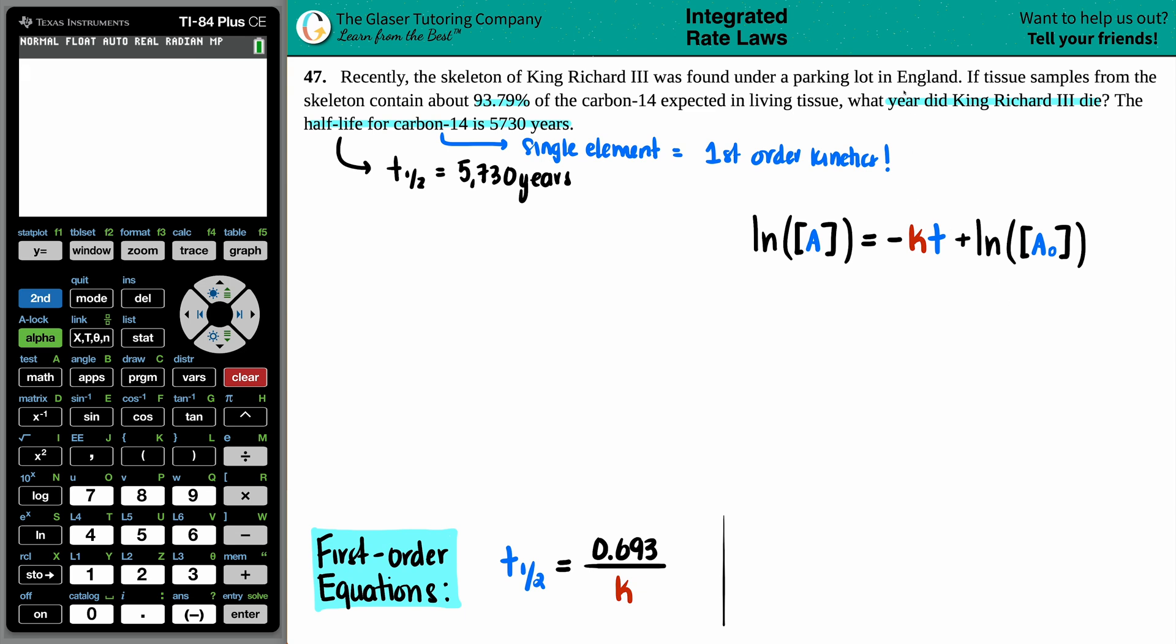Now the question said, what year did King Richard III die? If we're asking for a year, that means that we're talking about a certain amount of time. And this time is not the half-life. This is just a random time in which, you know, we're talking about something decaying. So that's just going to be t. In this formula, you have the general t, right? So that's what we're going to be solving for. And now we have these values. We have an a0 versus an a. An a0, 0 just means that no time has gone by. So a0 is always your initial amount.